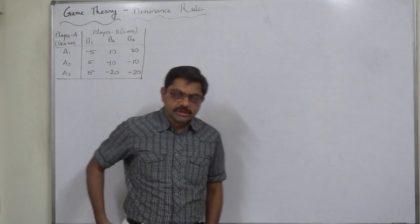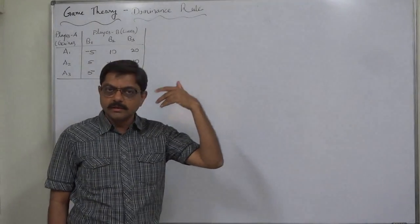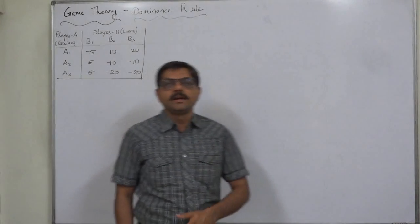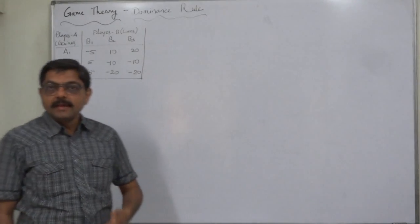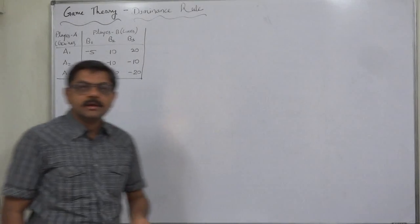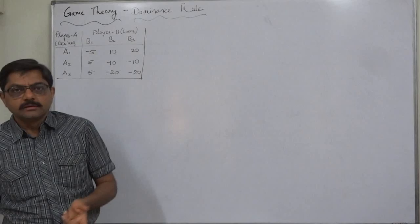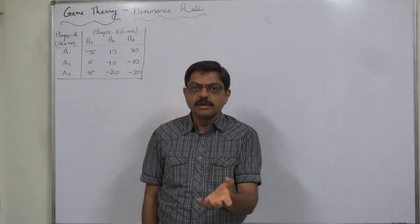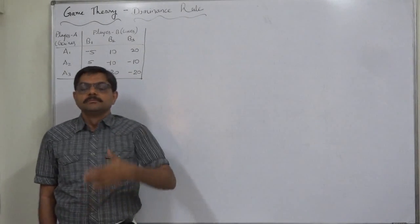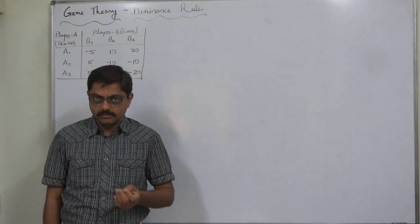The Dominance Rule is a procedure to reduce the order of the game. A game can be 3 by 3, 3 by 4, 3 by 5, 4 by 5, 5 by 5, or much higher order. In such cases, it becomes difficult to find the saddle point. And if the game is without a saddle point, it becomes too hard for any person to solve the game through algebraic, formula, arithmetic, or linear programming methods when the game is of higher order, greater than 2 by 2.